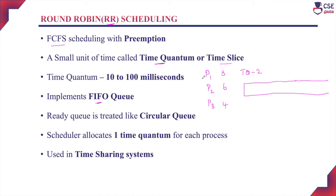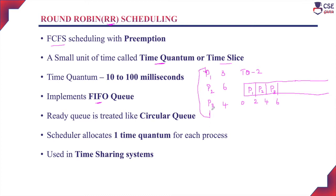With a time quantum of 2 milliseconds, process P1 will execute with the CPU first for 2 milliseconds, then leave the CPU for process P2. P2 will execute for 2 milliseconds, then process P3 will execute for 2 milliseconds. Now all three processes have completed their first time quantum of 2 milliseconds each. Since there is no other process in the job queue, it will maintain a circular queue — once the last process completes its time quantum, the queue moves back to the first process.